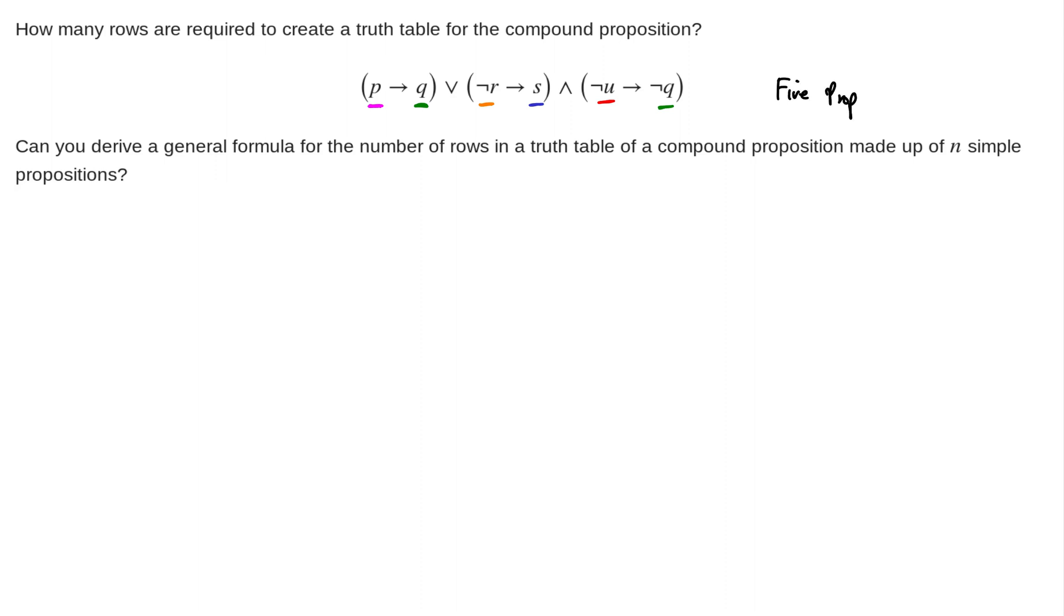Now, our truth table has to account for all possible combinations of the truth values of these things. For each one of these, P, Q, R, S, U, there are two possibilities, right? Either they're true or they're false. Not U, not R, not Q, they're either true or they're false. So that means we have two possibilities each and we have five different places here.